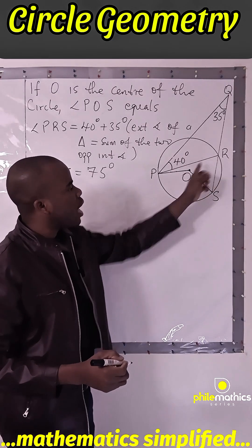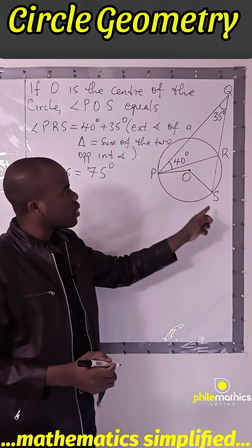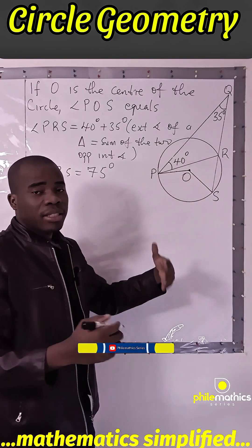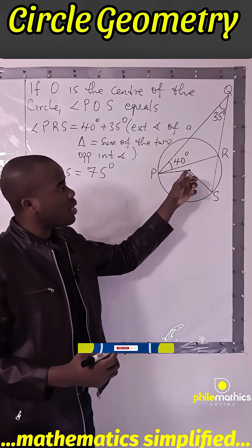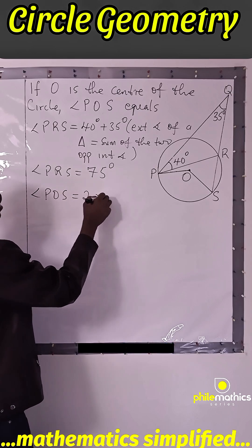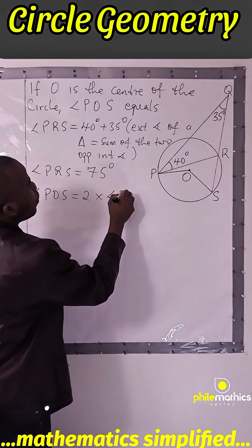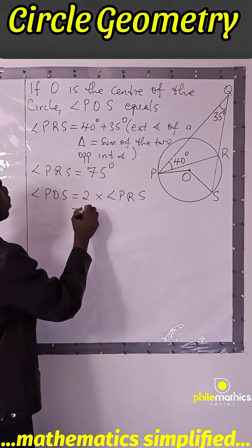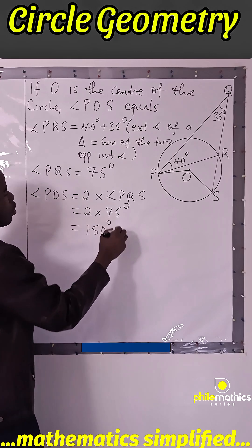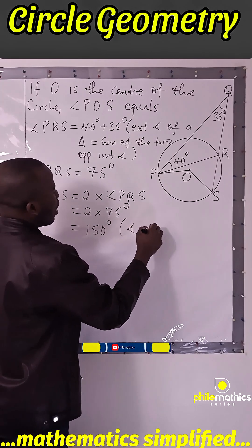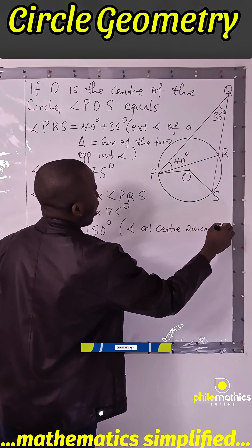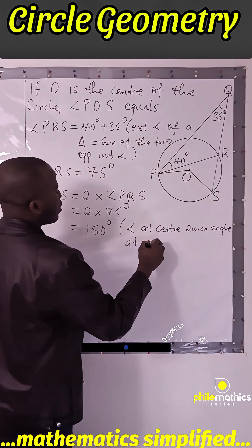Since angle PRX is 75 degrees, how do I get POS? POS is simply twice this angle, because the theorem in circle geometry says the angle at the center is twice the angle at the circumference. Therefore, angle POS is 2 times angle PRX, which is 2 times 75 degrees, which equals 150 degrees.